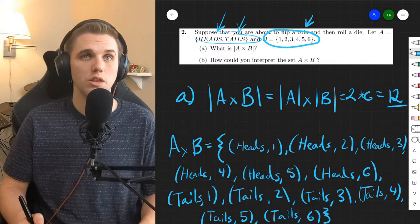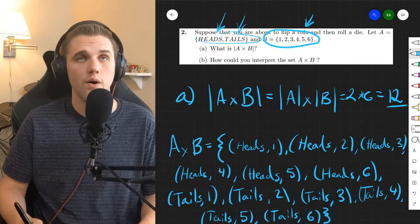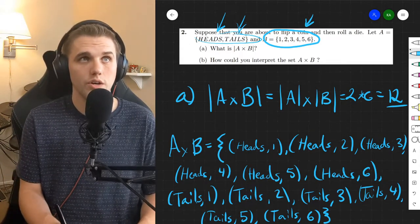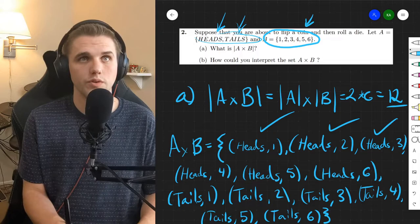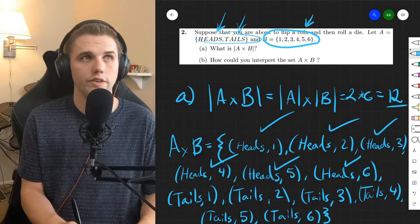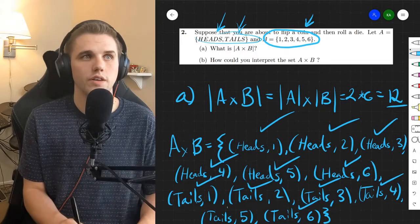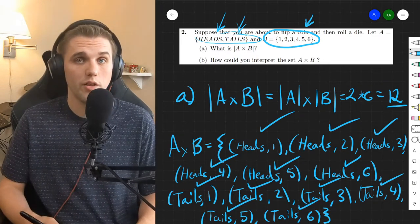So this is what A cross B looks like. And now we can count the number of elements in the set to get the cardinality which is 1, 2, 3, 4, 5, 6, 7, 8, 9, 10, 11, and 12. So those are your 12 elements specifically.